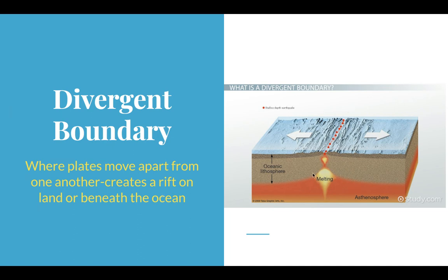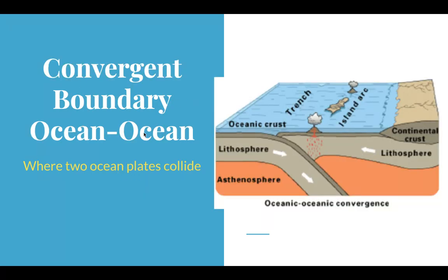A divergent boundary — 'diverge' means to go apart — is where two plates move away from each other. The plates separate and allow a crack to form where magma comes up from the asthenosphere. New crust piles up and forms ridges or mountain ranges, continuously pushed apart as more material rises from the mantle. This can also occur on land: the Great African Rift Valley is a divergent boundary where two pieces of continental crust are coming apart. It's theorized that part of Africa will eventually break off, like Madagascar did.